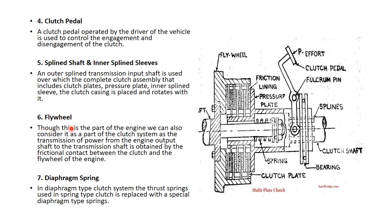Flywheel: though this is a part of the engine, we can also consider it as a part of the clutch system. The transmission of power from the engine output shaft to the transmission shaft is obtained by the frictional contact between the clutch and the flywheel of the engine. The flywheel is already attached with the engine shaft, and engine shaft torque is transmitted from the flywheel to the clutch shaft through this arrangement.